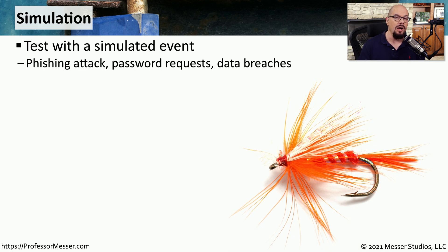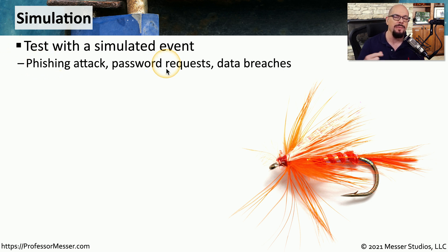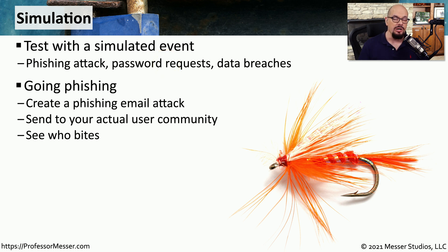Many organizations perform ongoing simulations where they pretend a particular event has occurred and see how people in the organization respond. A good example is a phishing attack or a password request — you can see how many people would click on that phishing attempt and provide credentials to a simulated attacker. This starts with creating an email that entices people to click on information and ultimately provide their login credentials. It can be sent to individual users or groups, and you can check reports to see who clicked through and who provided those credentials.